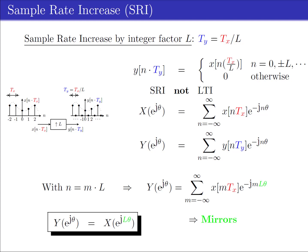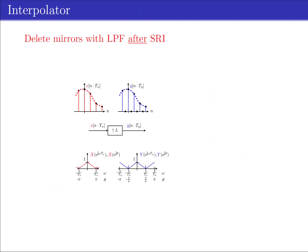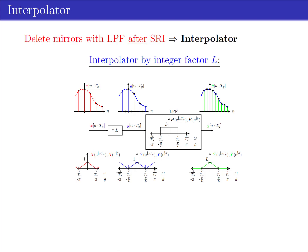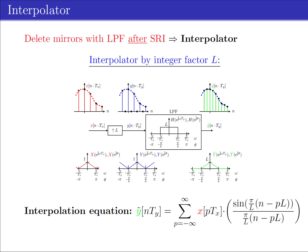The repetitions are called mirrors because there will be L-1 additional copies of the input spectrum within the new fundamental interval. Low-pass filtering of the output y[n,Ty] of the sample rate increase device will remove the L-1 mirrors. In effect, it fills in the zero-valued samples in y[n,Ty] with interpolated sample values, which explains the name interpolator. Note that the relation between the samples of the input and output of the interpolator is given by the interpolation formula.